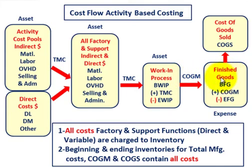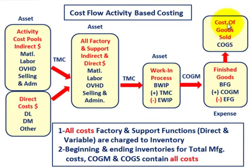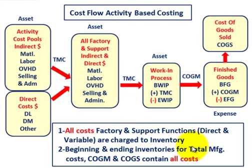Cost of goods manufactured flows into finished goods. We take beginning finished goods plus cost of goods manufactured, subtract ending finished goods, and that flows into our cost of goods sold — which is an expense matched against sales for the period. The key takeaways: all costs for factory and support functions, both direct and indirect, are charged to inventory; and beginning and ending inventories, cost of goods manufactured, and cost of goods sold all contain all the company's costs.